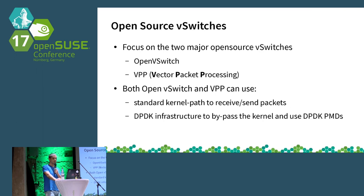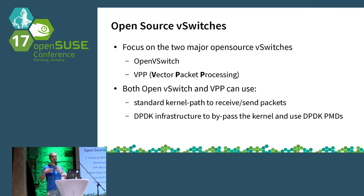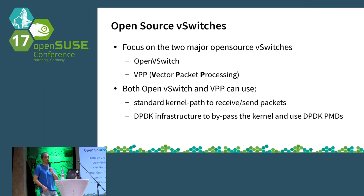As I said at the beginning, this presentation focuses mainly on two vSwitches: Open vSwitch and VPP. On the Open vSwitch side I'll be quicker, because there's another presentation later today on OVS and DPDK integration. Both projects can run using the standard kernel path for handling packets — standard socket-based — but they can also integrate with DPDK, the Data Plane Development Kit, which is the cutting edge in open source for packet handling and processing.